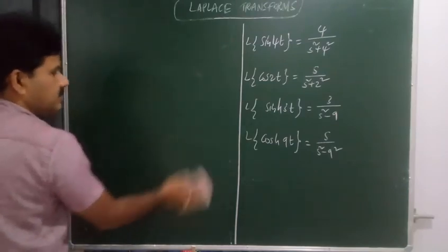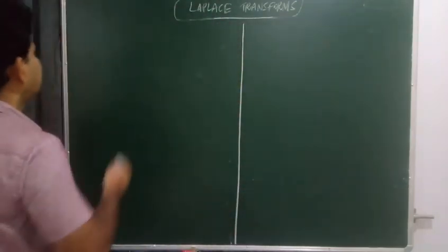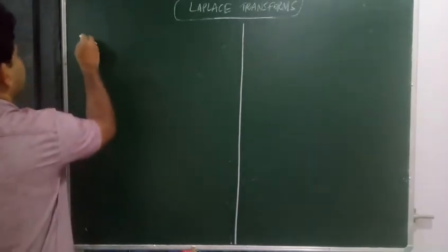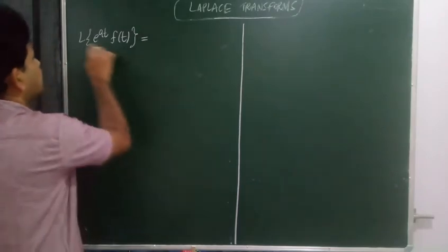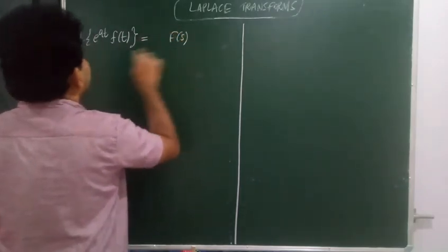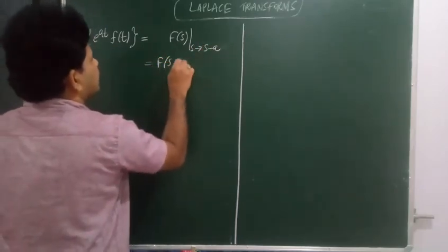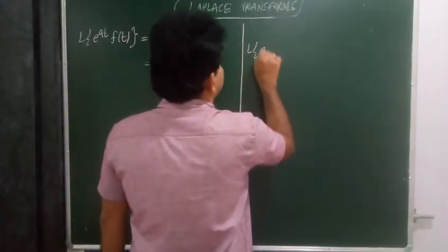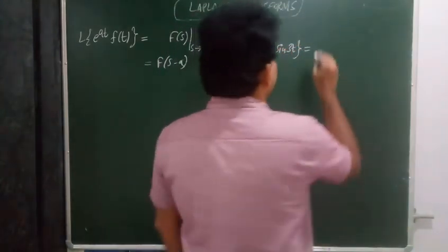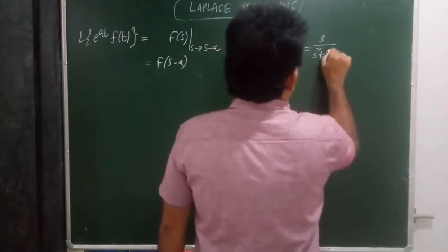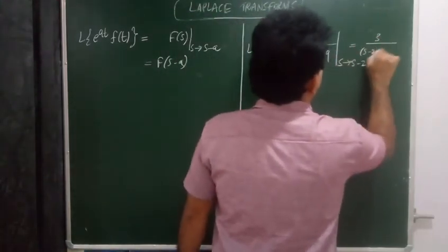We have discussed linearity property, change of scale property, and Laplace transforms of some elementary functions. Now the first shifting property: L{e^(at) · f(t)} — if Laplace transform of f(t) is F(s), then here s is replaced with s minus a, giving F(s − a). For example, L{e^(2t) · sin(3t)}: L{sin(3t)} is 3 over s squared plus 9, where s is replaced with s minus 2, giving 3 over (s−2) squared plus 9.